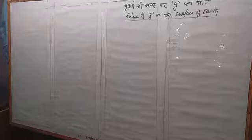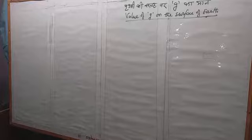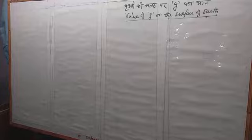Friends, today we are going to take a small topic of physics. We will see that small g is the gravitational acceleration. We will see how we derive it for the Earth and the Moon and how we compare them to each other. Let's start with the value of g on the surface of Earth.